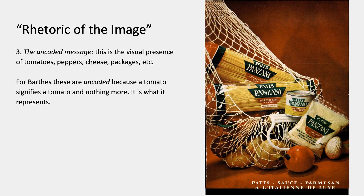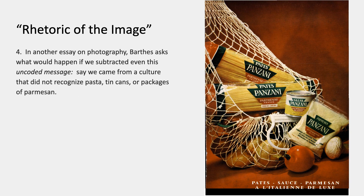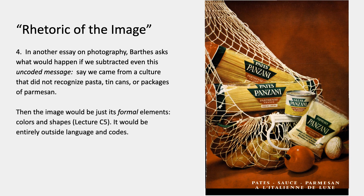Then there's the uncoded message — that's the visual presence of tomatoes, peppers, and cheese, and the packages and so on. For Barthes, they're uncoded because a tomato just signifies tomato and nothing more; it just is what it represents. In another essay on photography, he asked what would happen if we subtracted even the uncoded message — say we came from Mars, from a culture that didn't recognize pasta or tin cans or packages of Parmesan. In that case, the image would just be formal elements: colors, shapes, and it would be entirely outside language and codes.